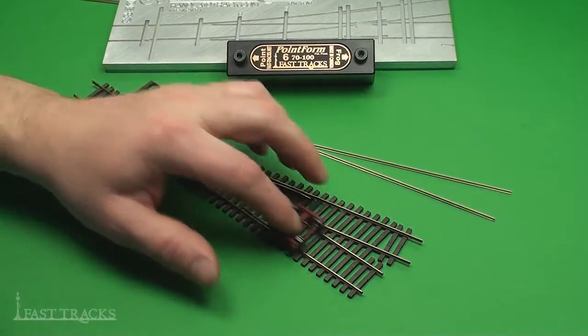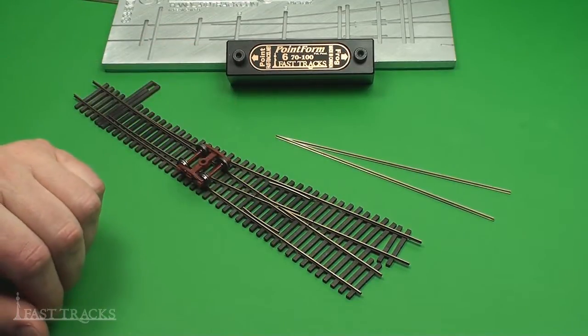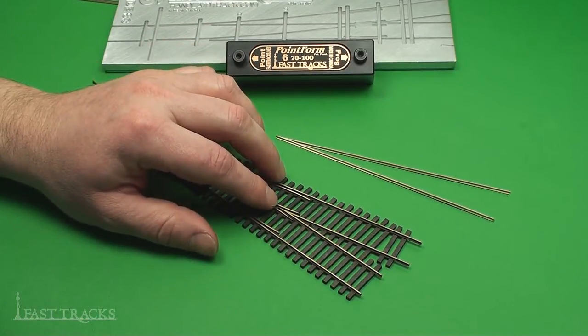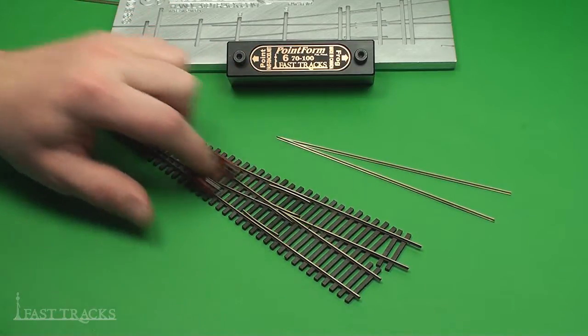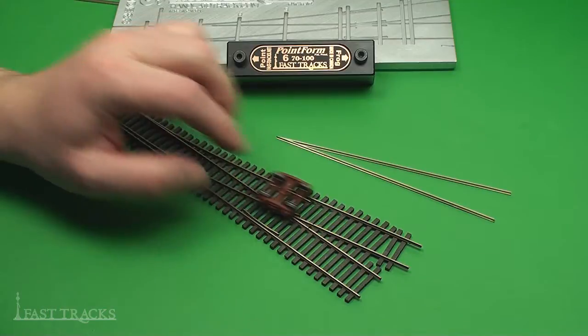A key feature in a smooth running turnout is precisely formed frog points. If they're nice and sharp and long and go down into the throat of the frog as far as possible, you end up with track work that performs very nicely.